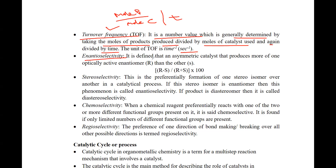Enantioselectivity is defined as a chiral catalyst that produces more of one optically active enantiomer than the other. If in a catalytic process more of one enantiomer is formed rather than the other, that is enantioselectivity.